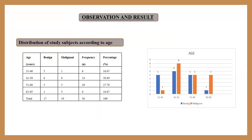Observation and results of the study. Distribution of study subjects according to age: most of the cases were between 41 to 50 years, of which eight were malignant and six were benign. The remaining cases were distributed between the 31 to 40, 51 to 60, and 61 to 65 age groups.